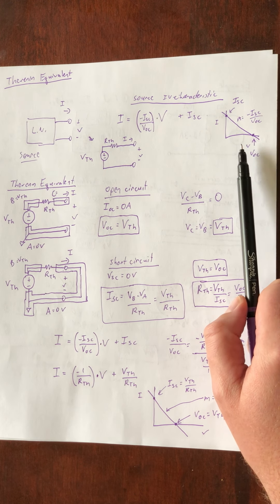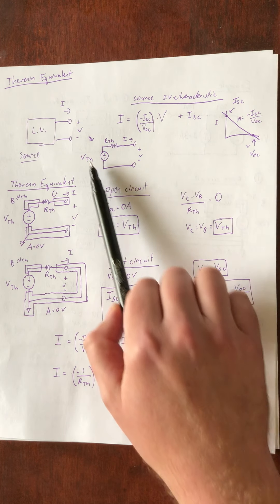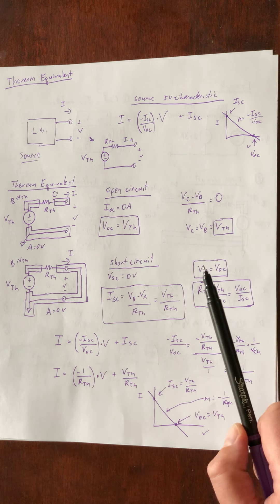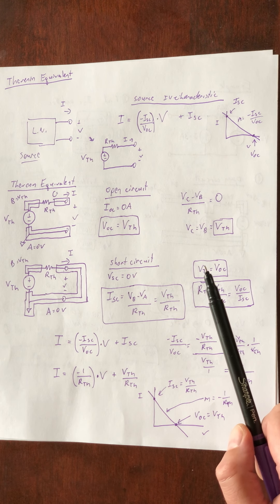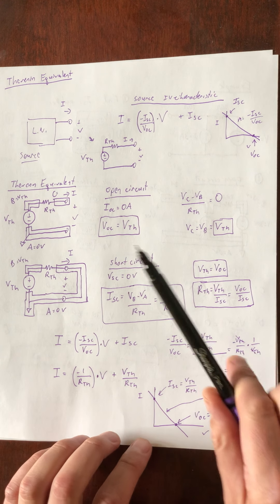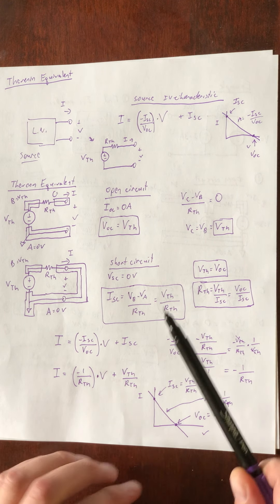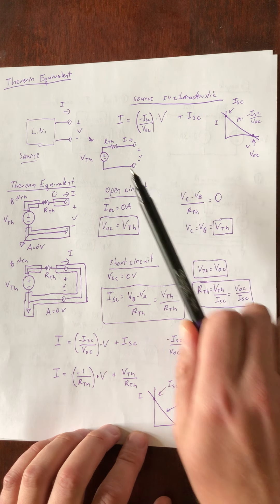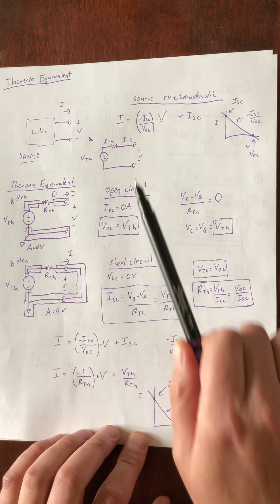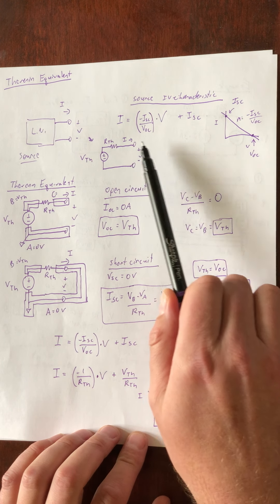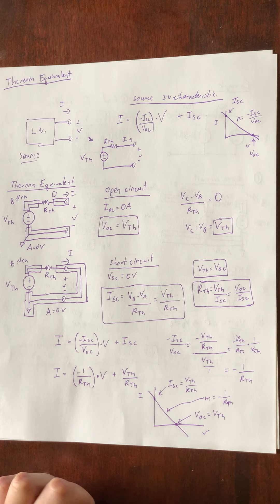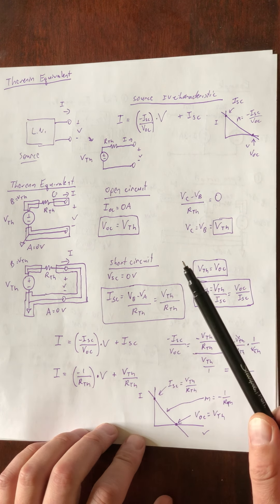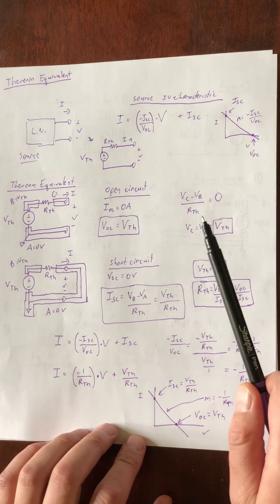We're going to try to match that IV characteristic with a Thevenin source — a voltage source and a Thevenin series resistance. What I'm going to do is go through the method of solving for the IV characteristic using this circuit. First we'll do an open circuit and solve for our I and V, then a short circuit, and see how that relates to the two Thevenin values.